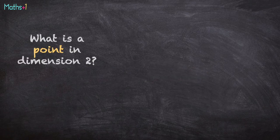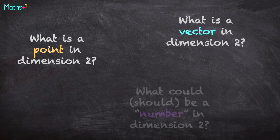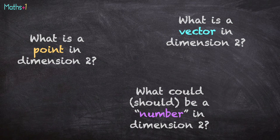What is a point in dimension 2? What is a vector in dimension 2? And what could and should be a number in dimension 2?